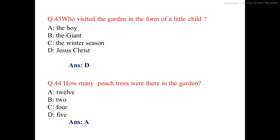Question number 44. How many peach trees were there in the garden? The correct answer is option A: 12.